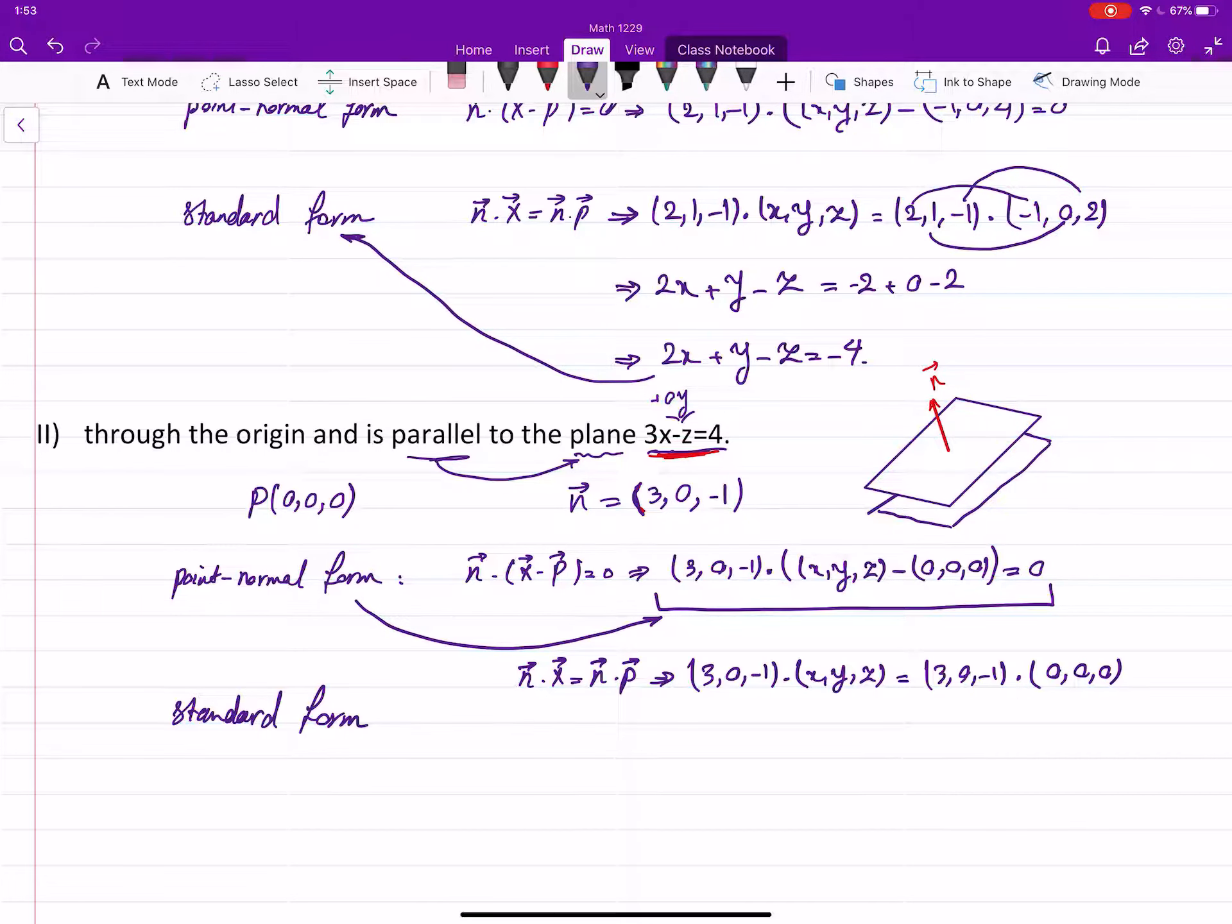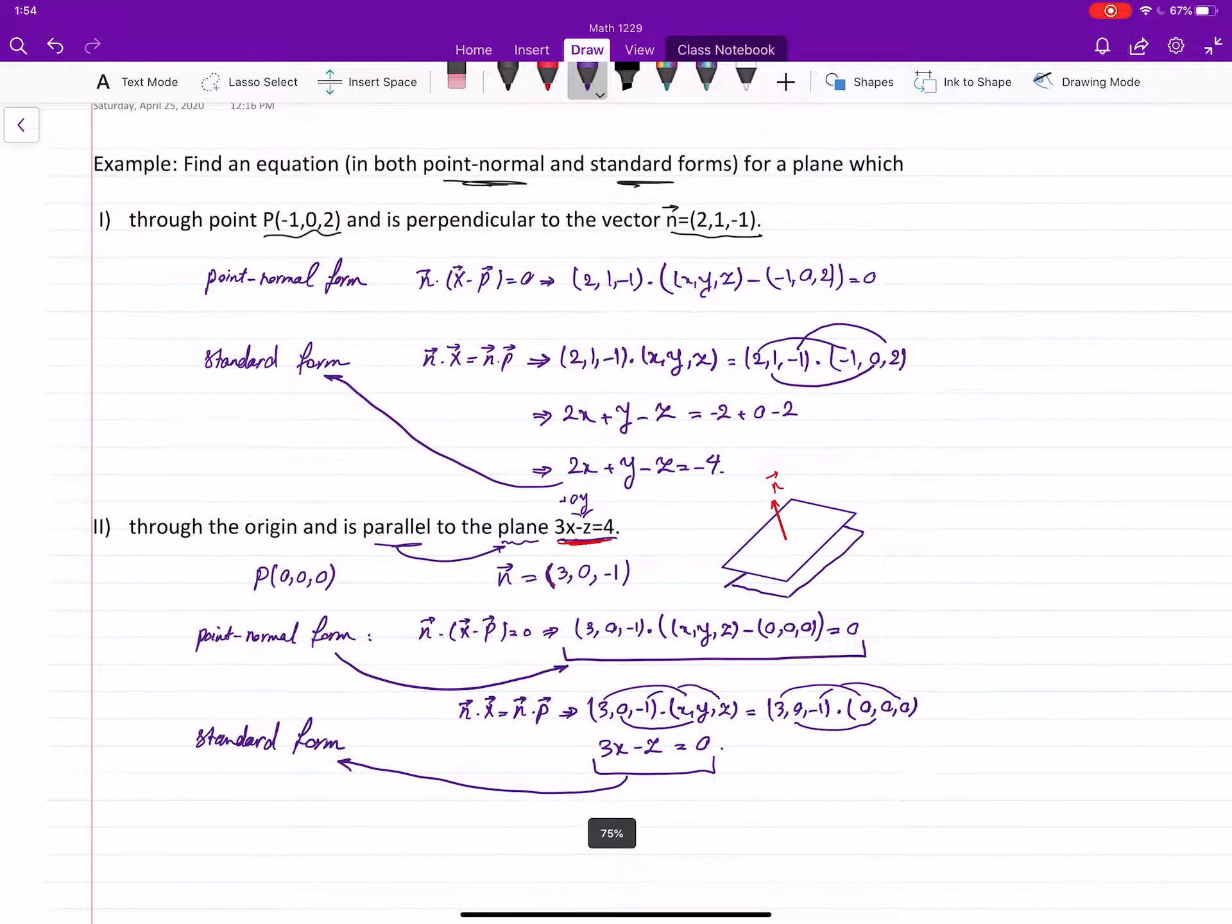Well, then you just do the dot product: 3 times x, 0 times y—then there will be no y—and -1 times z. That will give us 3x - z equals... well, you see the other side is 0. You dot product any vector with the zero vector, you get 0. So 3x - z = 0 is an equation in the standard form for this plane. See you next time, thank you.